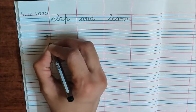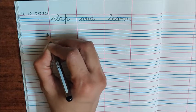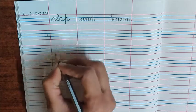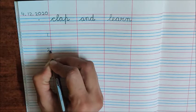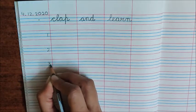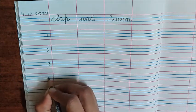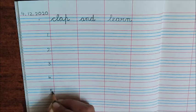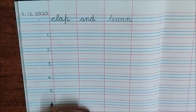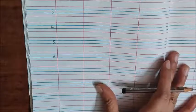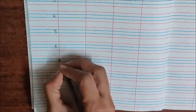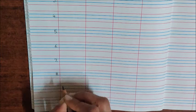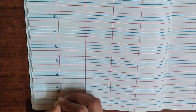Now, below the dot, write down numbers: one dot, two dot, three dot, four dot, five dot, six dot, seven dot, eight dot, nine dot, ten dot. We are going to write ten sight words.